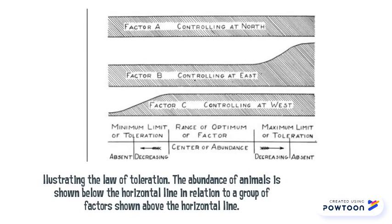Illustrating the law of tolerance, the abundance of an animal is shown below the horizontal line, in relation to a group of factors shown above the horizontal line.